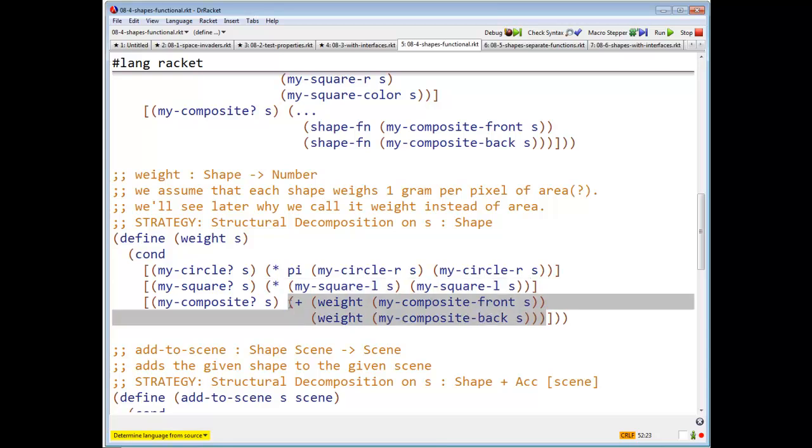And if it is composite, then it's the sum of the weights of the front and the back. Right, again, this is stuff you could have written in week three. This is why I called it weight instead of area because now I don't have to worry about overlaps.